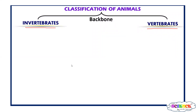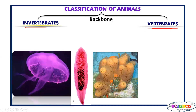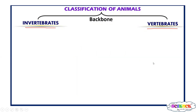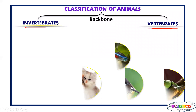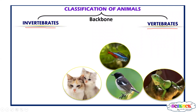Examples of invertebrates include insects, earthworm, cockroaches, jellyfish, liver flukes, sponges, etc. These organisms are further classified into nine phyla. Whereas vertebrates, which includes all organisms that have a vertebral column or backbone, such as dog, cat, fish, birds, amphibians, etc., are also further classified.